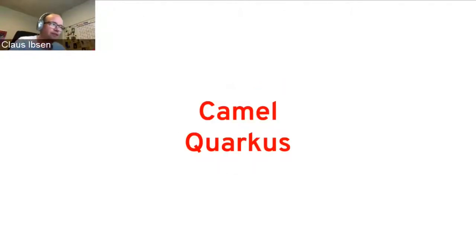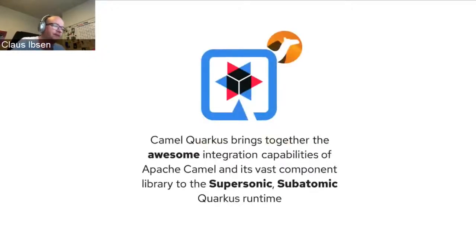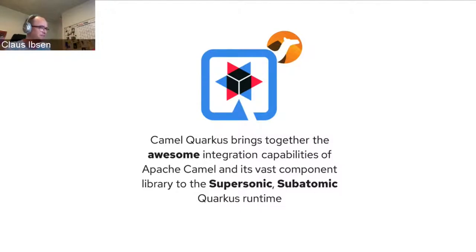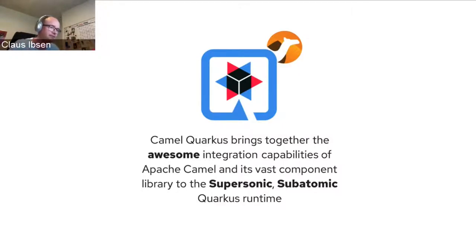So we start with Camel and Quarkus together. What you get is the awesome integration capabilities from Camel combined with the Quarkus runtime — the supersonic subatomic Quarkus runtime. That's actually the tagline. If you go to the Quarkus website, they say it's supersonic subatomic, because a quark is the smallest entity in the atom, so it's very small and tiny.